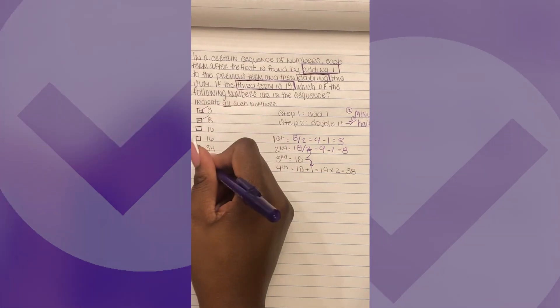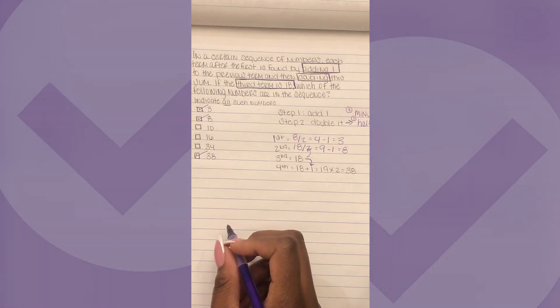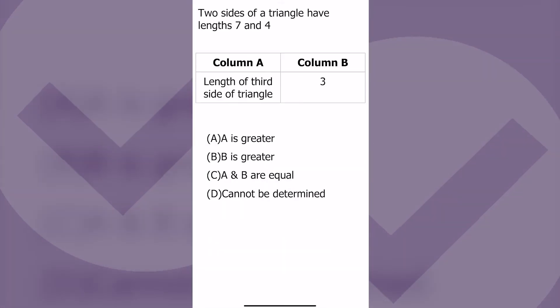Presto! GRE tip on the triangle inequality: the triangle inequality says that the sum of any two sides of a triangle has to be greater than the length of the third side. So let's call our third side x. That means that seven plus x must be bigger than four, four plus x has to be bigger than seven.